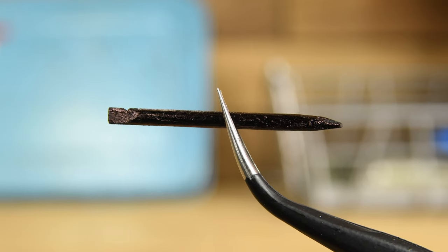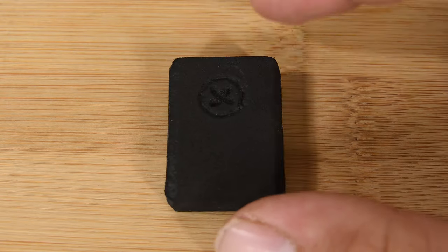The kit includes an ESD-safe micro spudger, micro pliers for all your grasping needs, a micro opening tool, and three of our smallest bits.